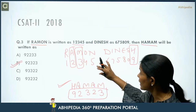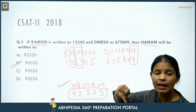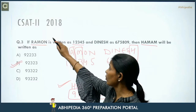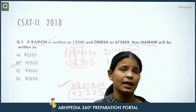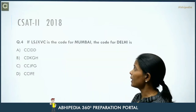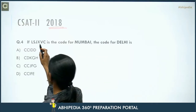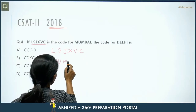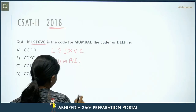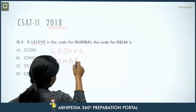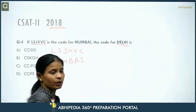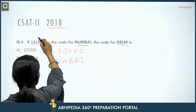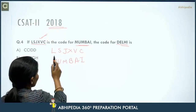Next is a 2018 question: if LSJXVC is the code for MUMBAI, then what is the code for DELHI? Looking at the pattern: L is at position 12, M is at position 13 — so plus 1. S is at position 19, U is at position 21 — that means plus 2. Then plus 3, plus 4, plus 5, plus 6 respectively.